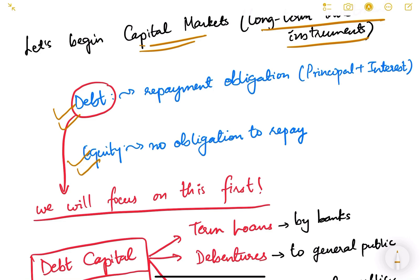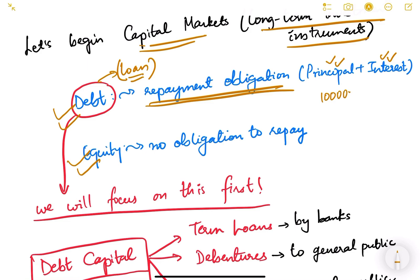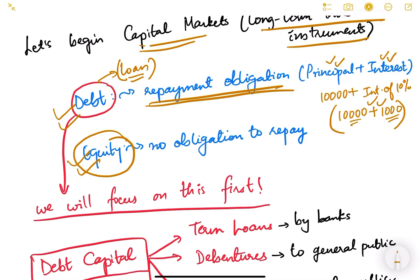The basic difference between debt and equity is that in debt there is a repayment obligation, because debt is a kind of loan you take from people. There is a repayment obligation for both the principal amount and the interest promised. For example, if you take a debt of 10,000 rupees at 10% interest for one year, after one year you must pay back 10,000 plus 1,000 rupees interest. You are obligated to pay when dealing with debt instruments.